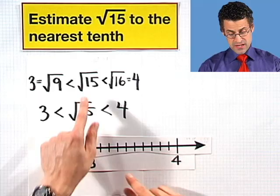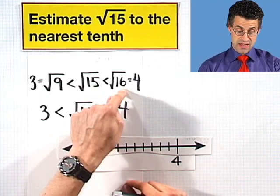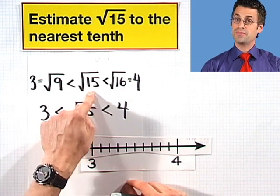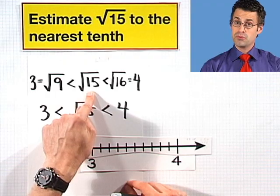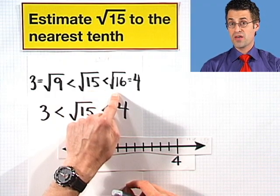Square root of 15, well notice that the number 15 is really close to 16. In fact, a lot closer to 16 than it is to 9. And so my thinking is that the square root of 15 will probably be really close to the square root of 16, or in other words, 4.